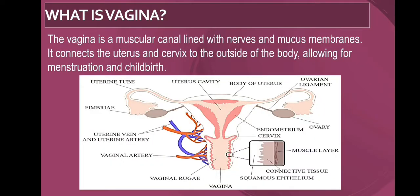What is vagina? It is a muscular canal lined with mucous membranes. As we can see in the diagram, it has a uterine vein, uterine artery, and vaginal artery. It also has a muscle layer, connective tissue, and squamous epithelium. It connects the uterus and the cervix with the outside body, allowing menstruation and childbirth.